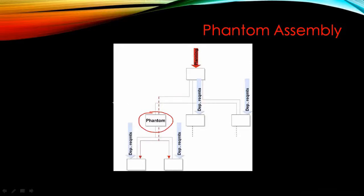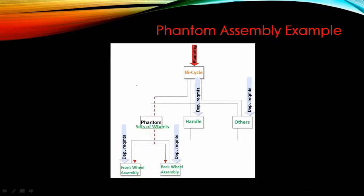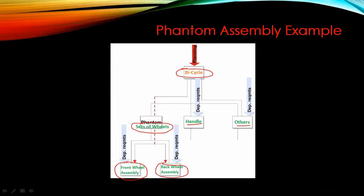For example, consider the assembly BOM of a bicycle. A bicycle requires wheels, a handle, and other parts. The main BOM is for the bicycle, and among the BOM components we have a component called 'set of wheels.' Set of wheels is not itself a physical product — it's just a description. However, this description does have a BOM underneath it, containing a front wheel assembly and a back wheel assembly.